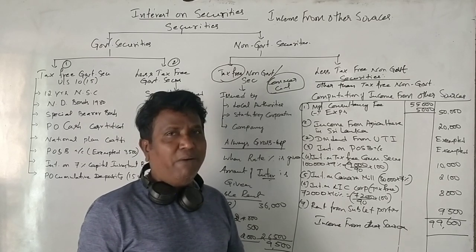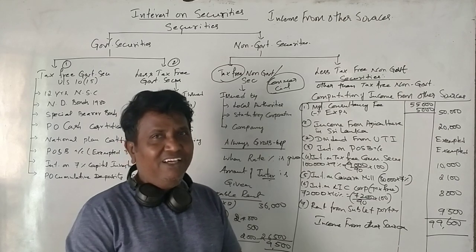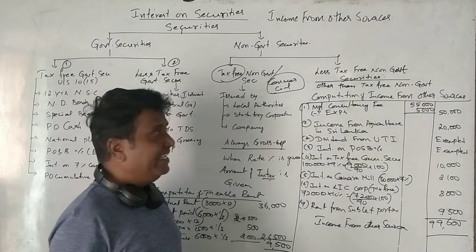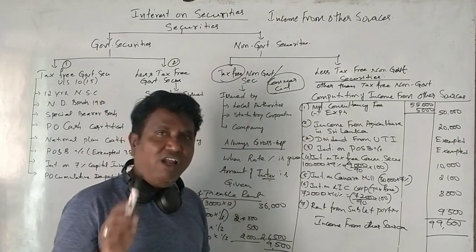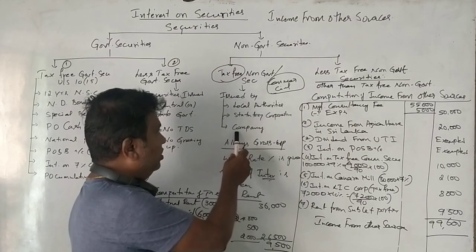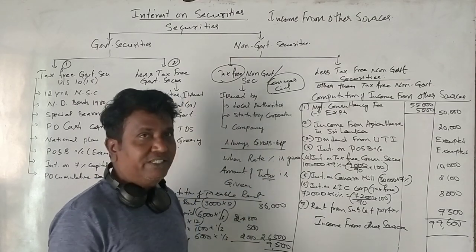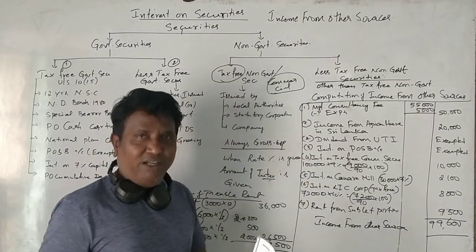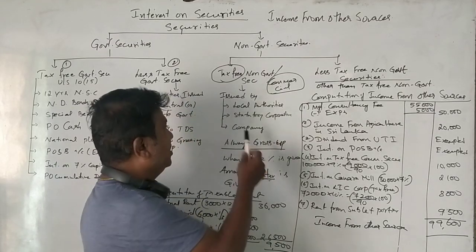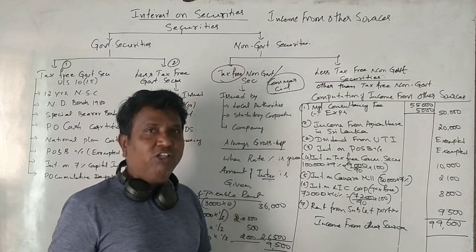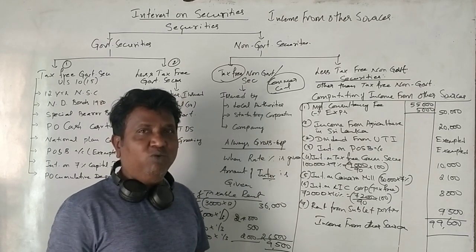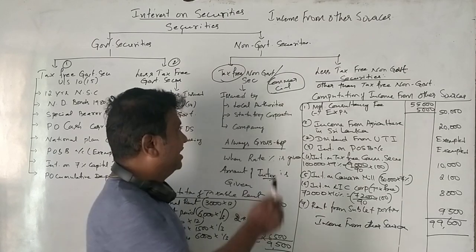She holds 10%, tax-free commercial securities — listed or unlisted, ignore that detail for this calculation. Tax-free commercial securities means non-government securities. Non-government means private companies, statutory corporations like LIC, GIC, or banking companies including the Reserve Bank of India. These are statutory corporations.